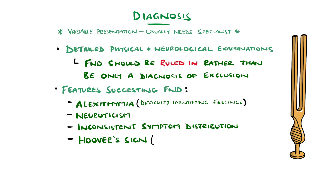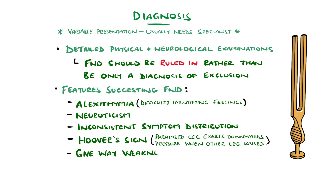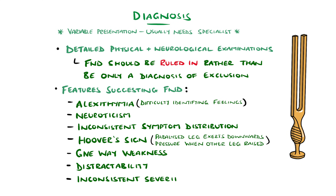Hoover sign is another clue, where a seemingly paralysed leg will exert downwards pressure on the examiner's hand as the other leg is raised against resistance. Others include give-way weakness, where there is full power initially, followed by a sudden drop-off in power. Distractability — for example, a tremor that changes or disappears when asked to copy a rhythmic movement with the other hand. There is often inconsistent severity, for example being able to walk in but having severe leg weakness on examination. Vision disturbance in a tunnel distribution rather than a cone is another example.